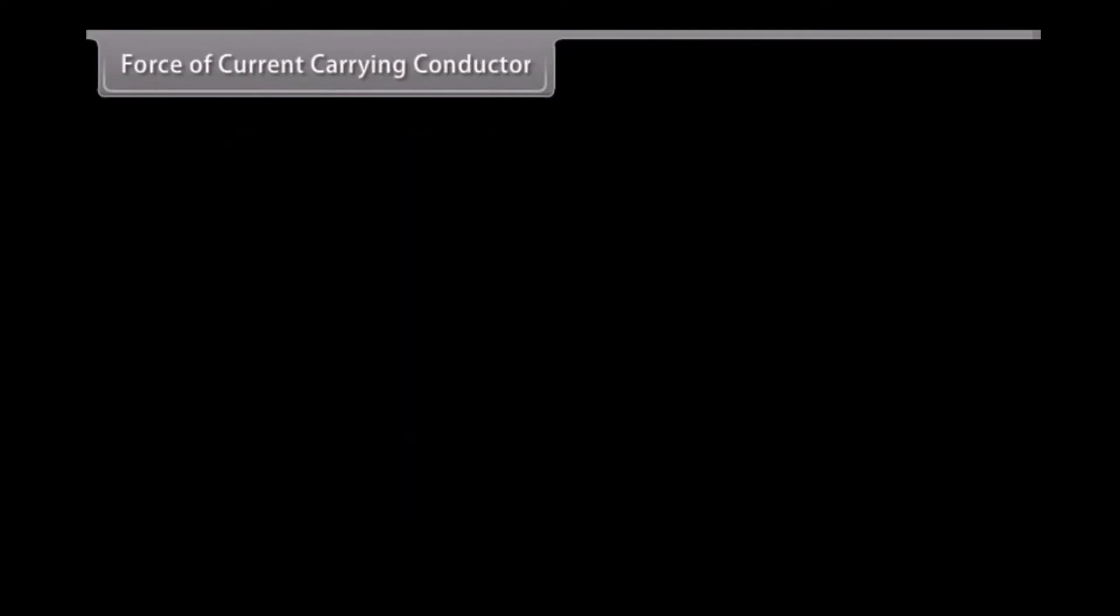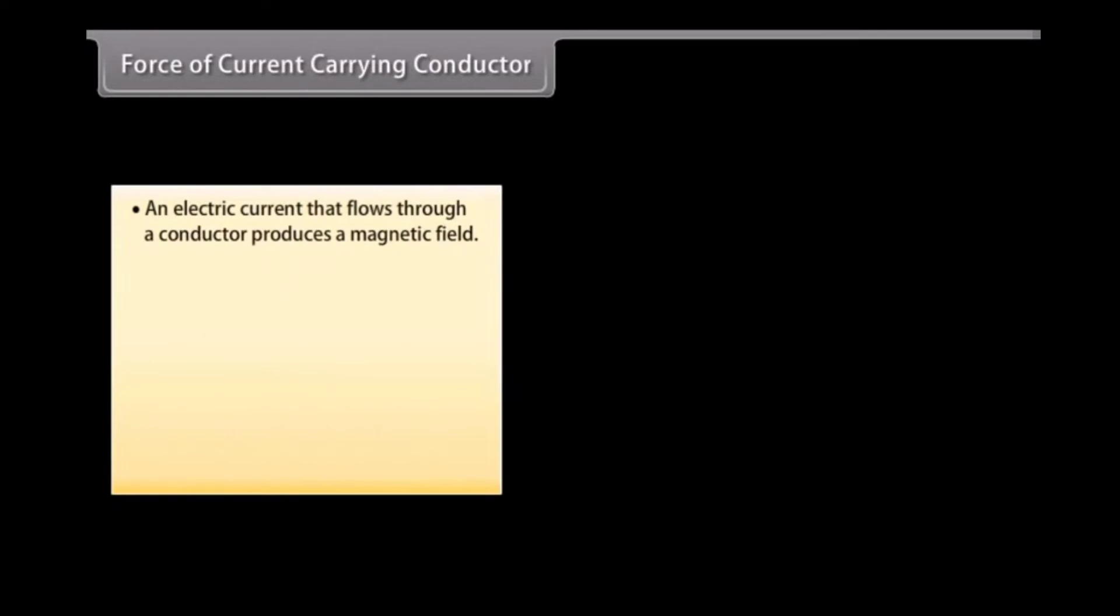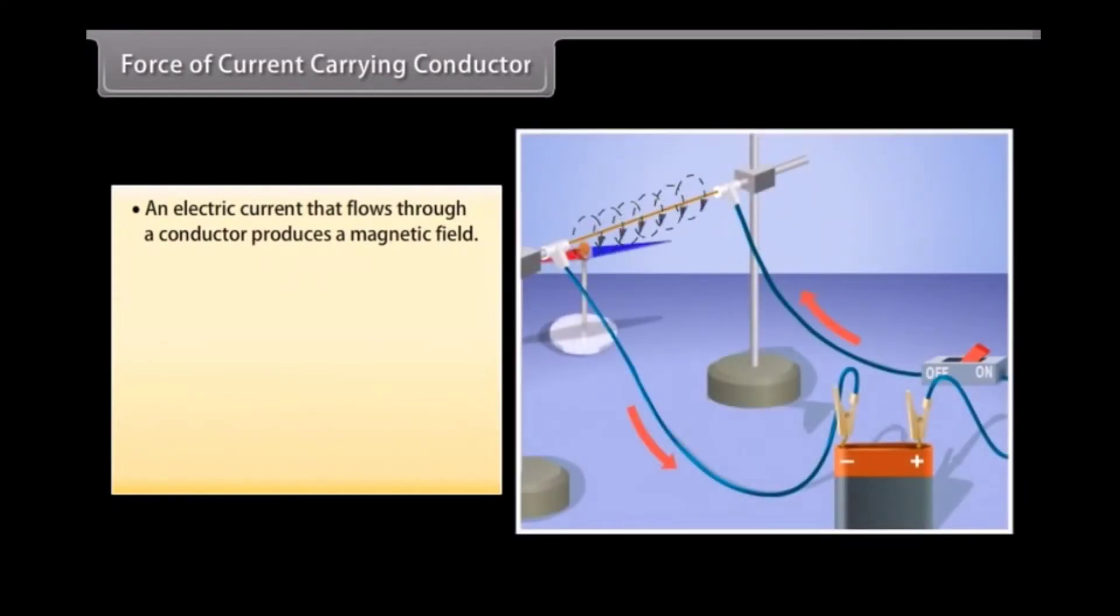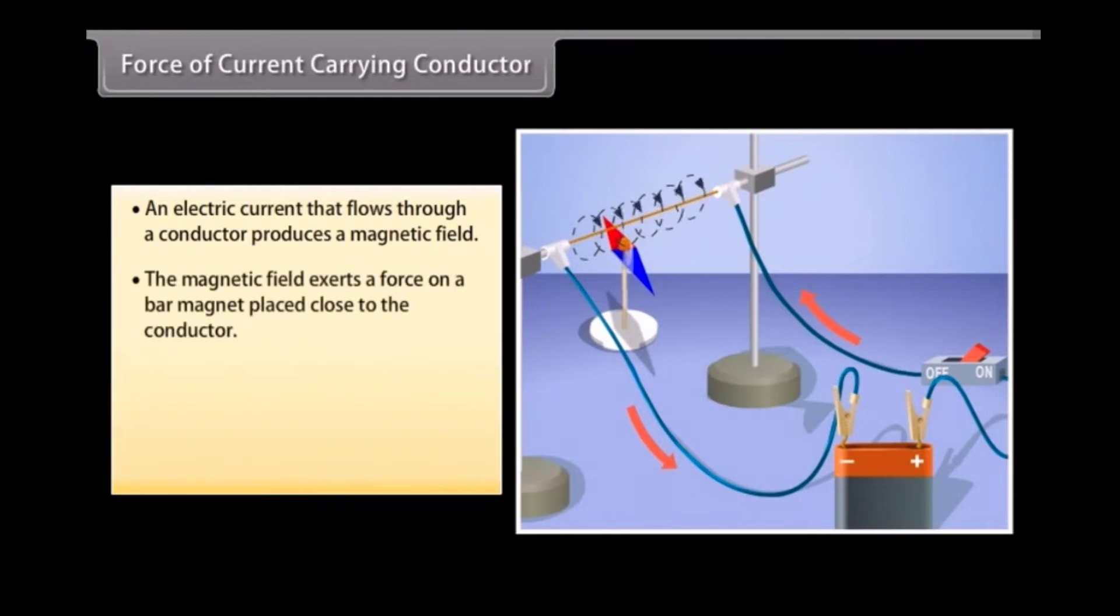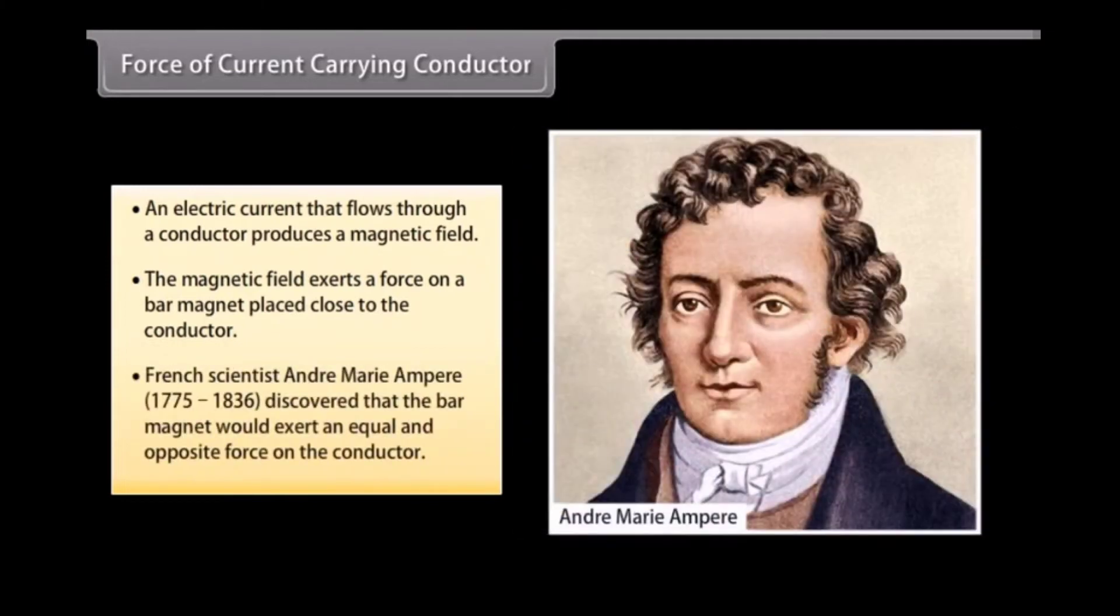Force of current-carrying conductor. We have seen that an electric current that flows through a conductor produces a magnetic field. The magnetic field so produced exerts a force on a bar magnet placed close to the conductor. French scientist André-Marie Ampere (1775-1836) discovered that the bar magnet would also exert an equal and opposite force on the conductor.